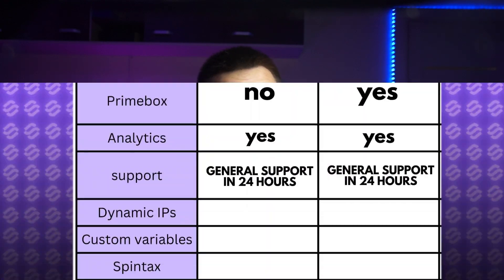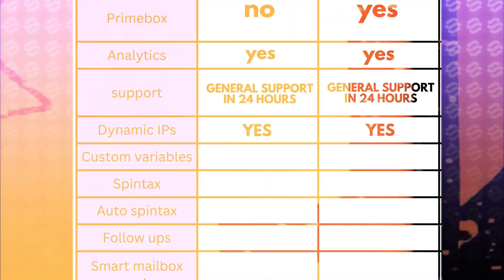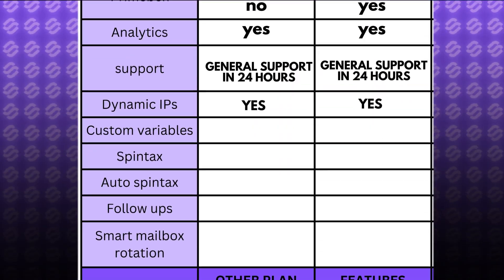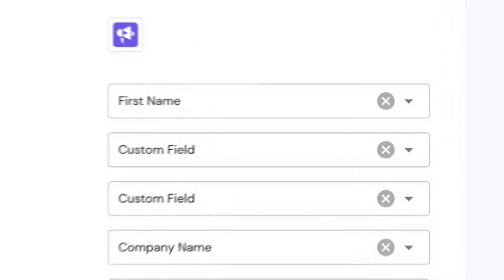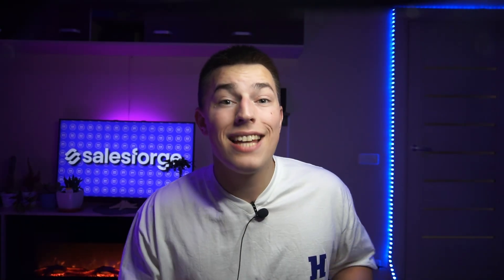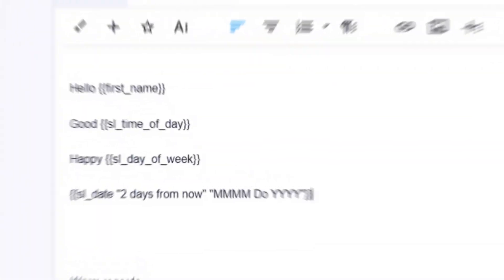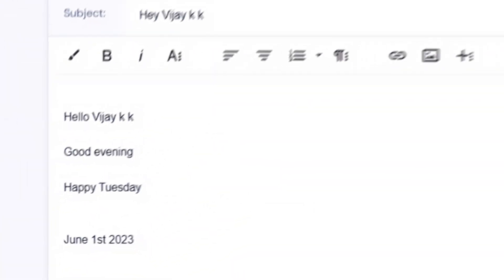Both platforms — Instantly and Smartlead — provide dynamic IPs, so you're safe with either option. You can use custom variables in both, allowing you to address your prospects' first and last name together with company name. But it seems like Smartlead has more custom variables, like time and date, that you could use in your CTAs.